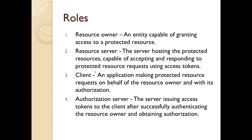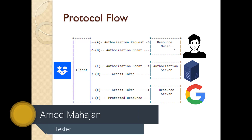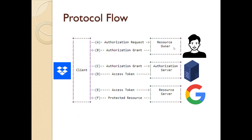If you see this diagram again, at step A the client is requesting authorization from the resource owner. Once the resource owner authorizes them — you remember when I clicked on Google, the Google account page opened, I entered my credentials and it was authorized — it returns something called an authorization grant to the client. The question is: how does the client redirect the resource owner to the authorization server so the client can get the authorization grant?